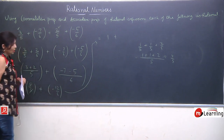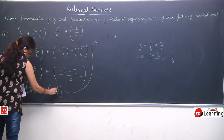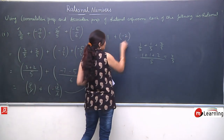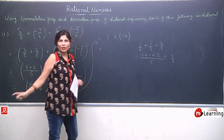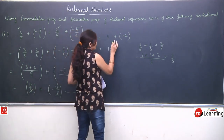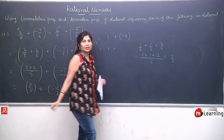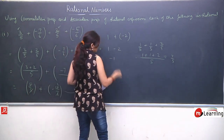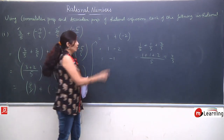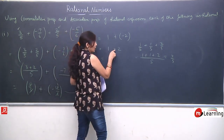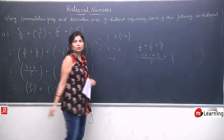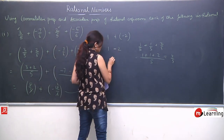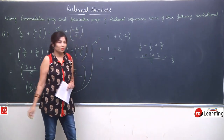Now 5/5: the 5s cancel and give result 1. And −12/6: we can cancel this too — 12 and 6 cancel to give −2. So we have 1 plus (−2), which is 1 − 2. Here 1 is positive and 2 is negative, so we subtract: 2 − 1 = 1, and the greater number has negative sign. So the final answer is −1.